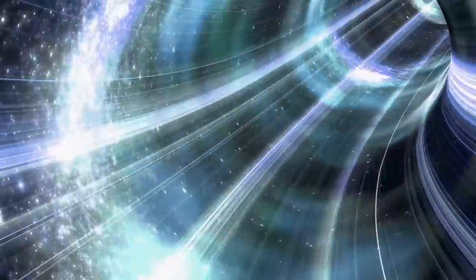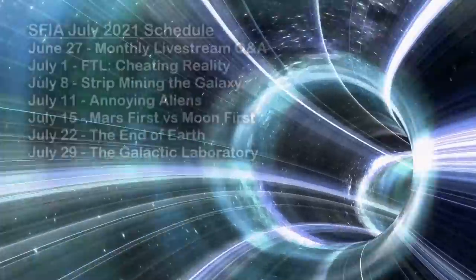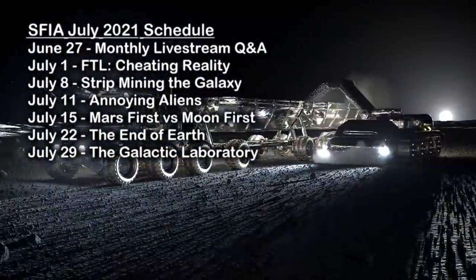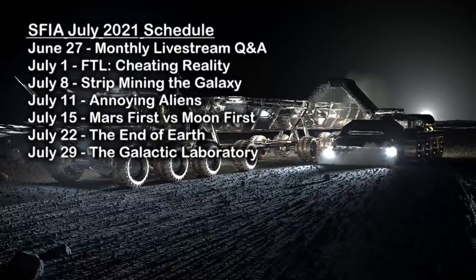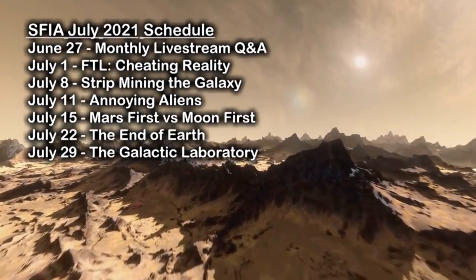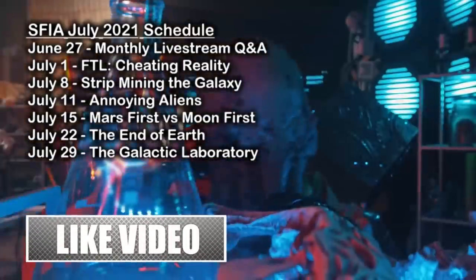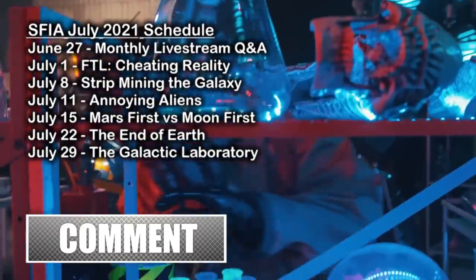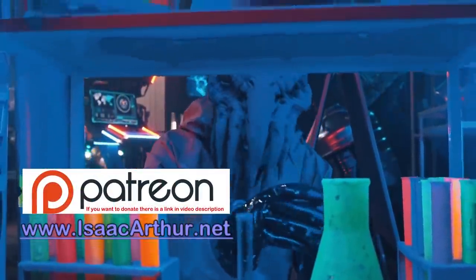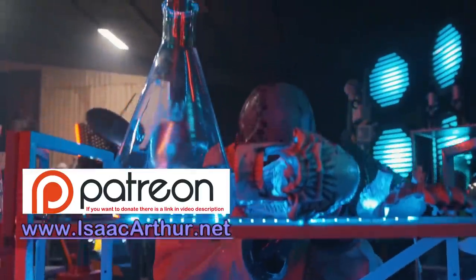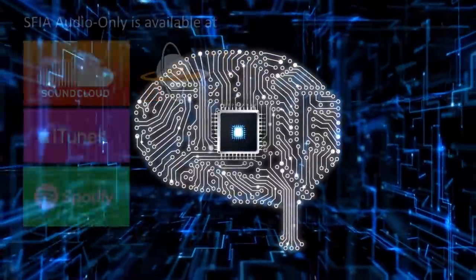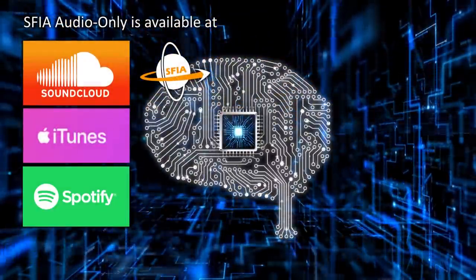So that'll wrap us up for today but not for the month, as this Sunday we'll be having our end of the month livestream Q&A. July will be a busy month starting July 1st with a long request to return to our Faster Than Light series for Cheating Reality. From there we'll move on to Strip Mining the Galaxy, our second Galactic Domination episode on July 8th, then our Sci-Fi Sunday mid-month episode Annoying Aliens, then we'll discuss if we should go to the Moon or Mars first. If you want to know when those and other episodes come out, make sure to subscribe to the channel. If you'd like to help support future episodes you can donate to us on Patreon or on our website, IsaacArthur.net. You can also follow us on iTunes, Soundcloud, or Spotify to get our audio-only versions of the show.